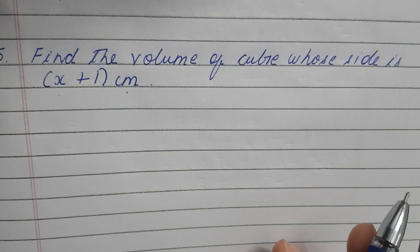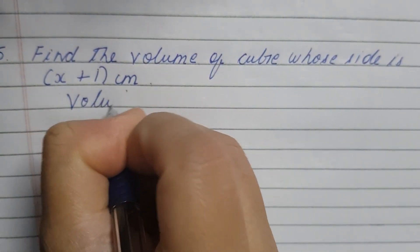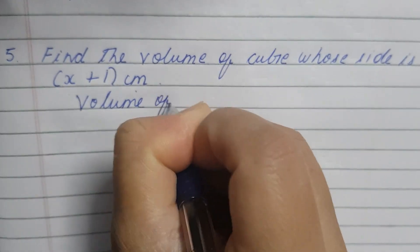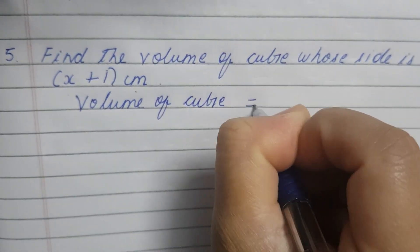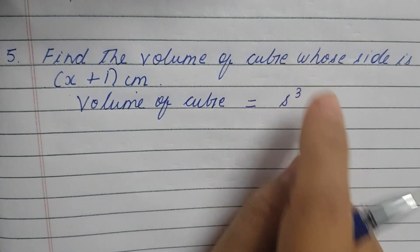So we will use the volume of the cube. Volume of the cube formula: Volume of cube equals s³, that is, it is the length of the edges.